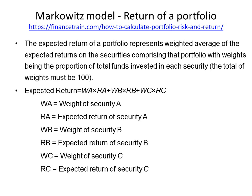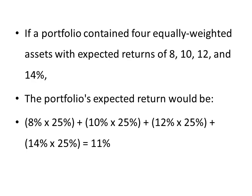The expected return of a portfolio is calculated using the following formula in Markowitz's model. The expected return of the portfolio equals the weight of security A in the portfolio multiplied by the expected return of security A, plus the weight of security B multiplied by the expected return of security B, and so on. For example, if a portfolio contains four equally weighted assets with expected returns of 8%, 10%, 12%, and 14%, the portfolio's expected return would be (8×25%) + (10×25%) + (12×25%) + (14×25%) = 11%.